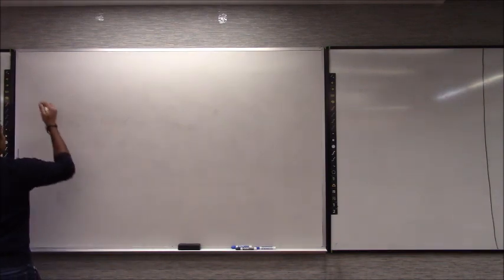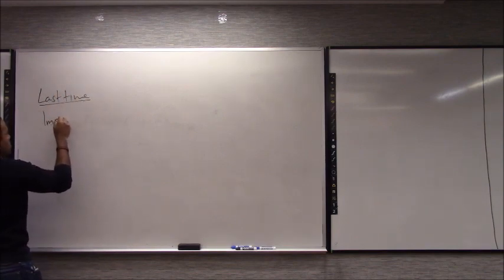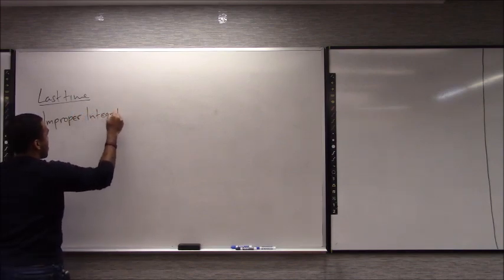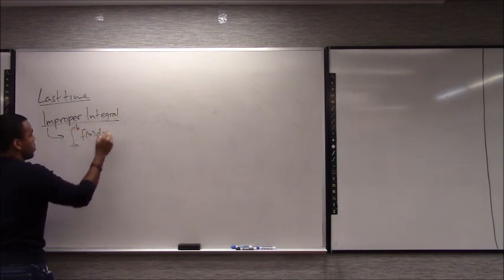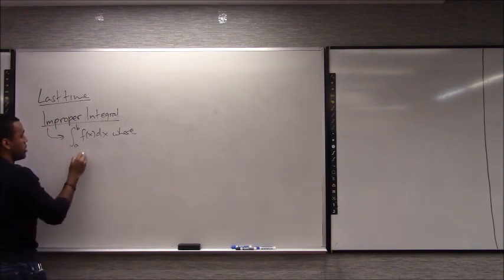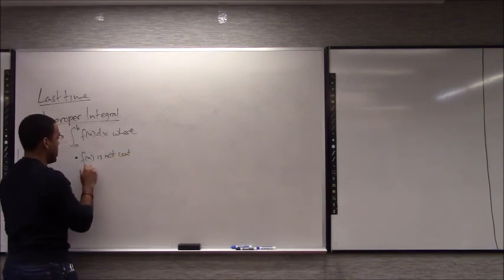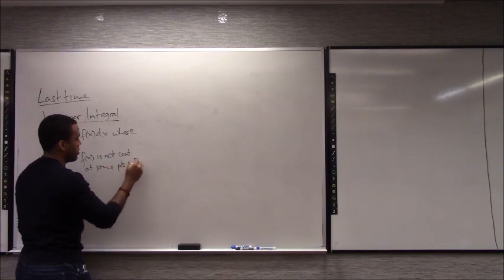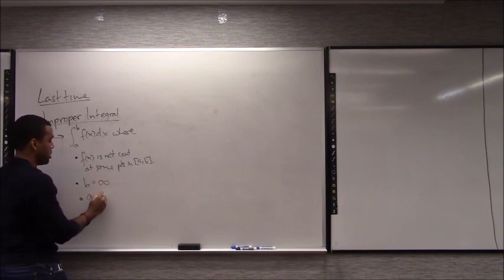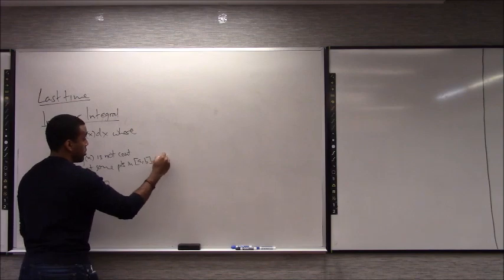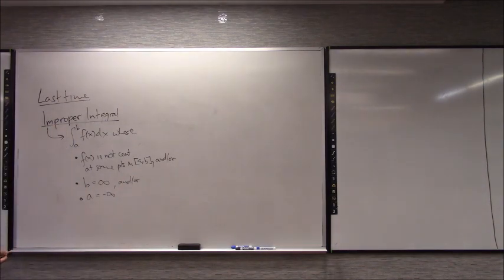Let's get back into it. Last time we introduced something called an improper integral. This means you have an integral from a to b of f(x) dx, where either your f(x) is not continuous at some points in the interval [a,b], or your b is equal to infinity, or your a is equal to negative infinity. You can have several of these happening at the same time, and we call that an improper integral.